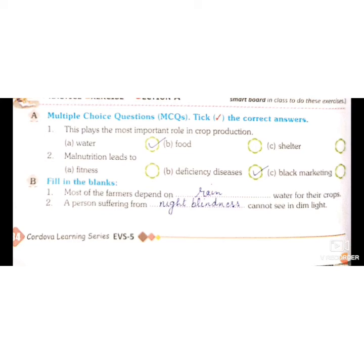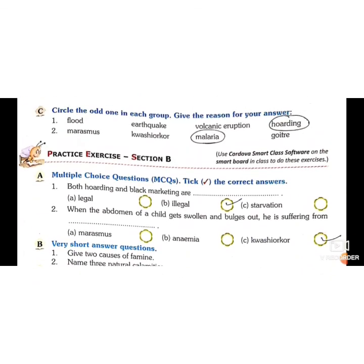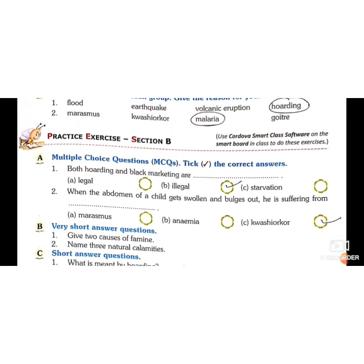A person suffering from night blindness cannot see in dim light. Circle the odd one out: flood, earthquake, volcanic eruption, and hoarding. The answer is hoarding, because flood, earthquake, and volcanic eruptions are natural calamities, but hoarding is a human-made reason.